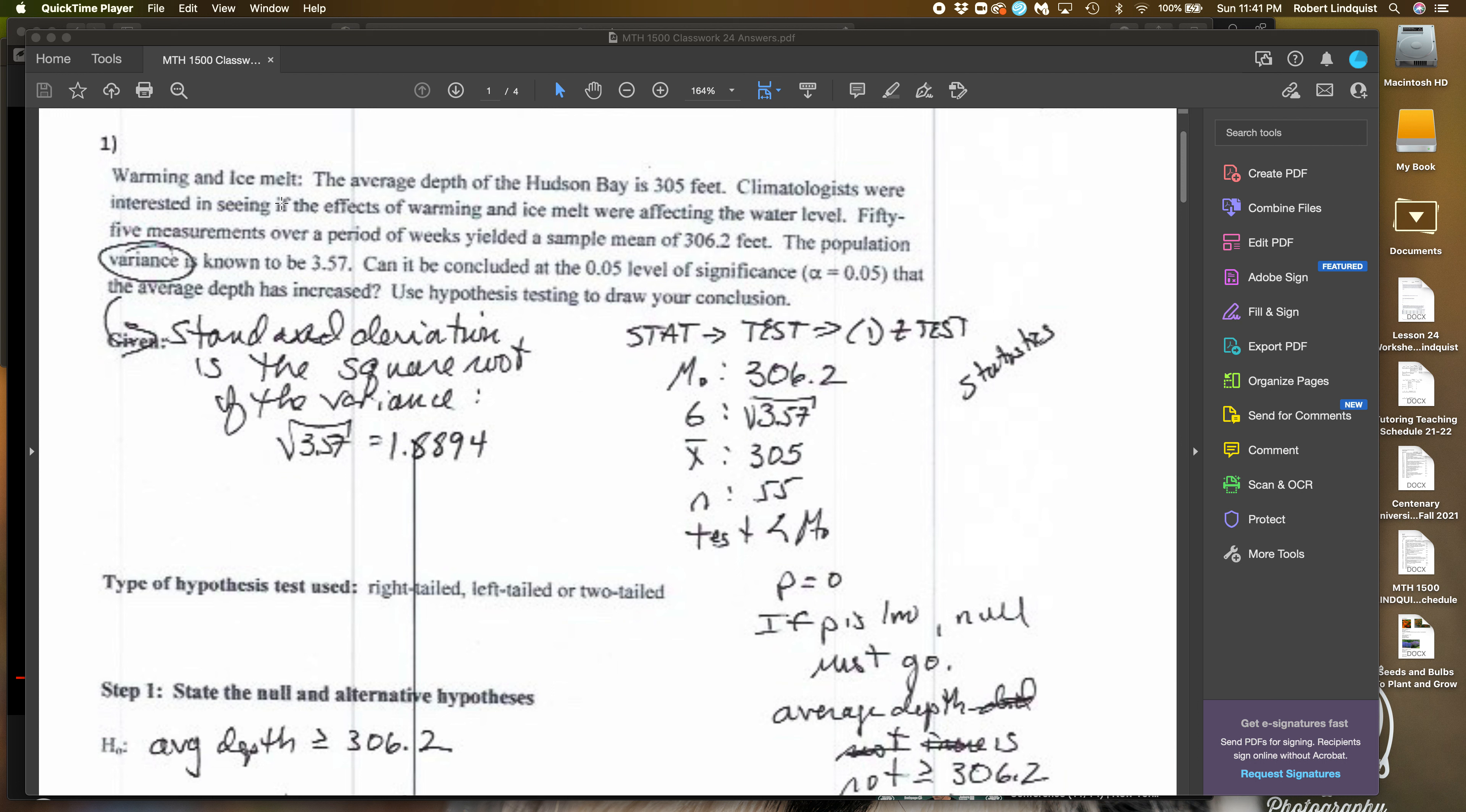So in this case, they tell you the variance. You have to know that the standard deviation is the square root of that, which numerically would be the square root of 3.57, which is 1.8894. But in the calculator, you can just enter square root of 3.57.